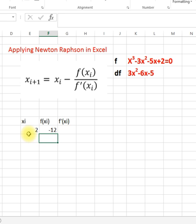So at this xi the value of function is minus 12 and here value of derivative which will be 3 times x² minus 6x minus 5. So xi is 2, f of x is minus 12, the derivative is minus 5.